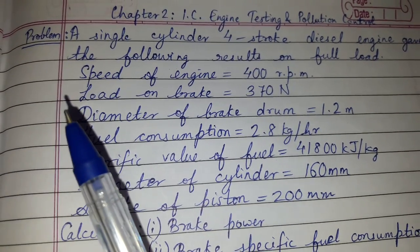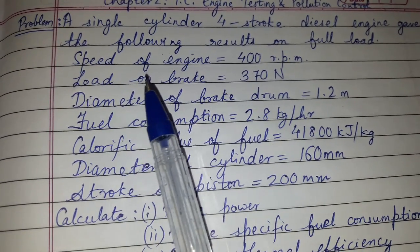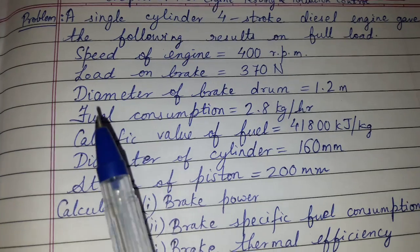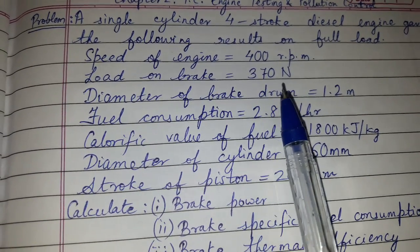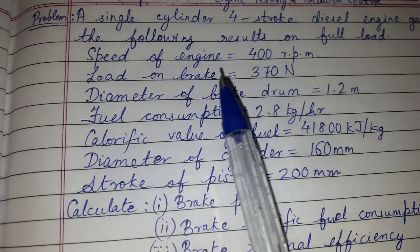A single cylinder four stroke diesel engine gave the following result on full load. Speed of engine 400 rpm, that is N = 400. Load on brake = 370 newton, that is W - S = 370 newton.